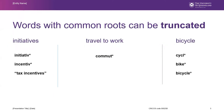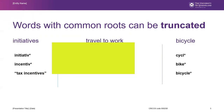Truncation or stemming is used to expand research by retrieving potential variations of a keyword that use the same root or stem. Truncation is represented with an asterisk. For example, the word 'initiative' with an asterisk will pull all information containing initiative or initiatives, both singular and plural. Similarly, 'commute' with an asterisk will retrieve articles containing commute, commuting, or commuter.